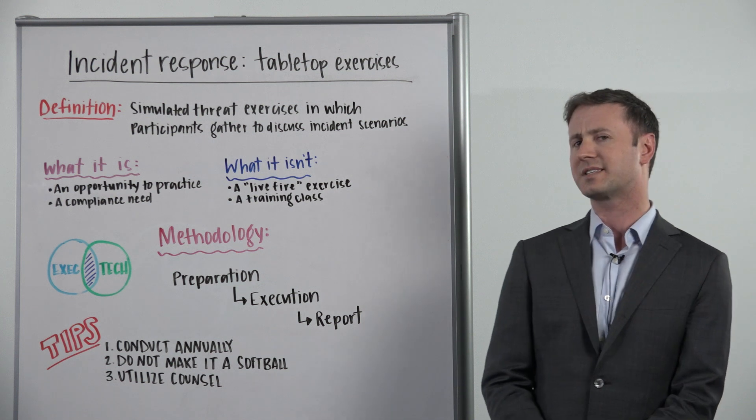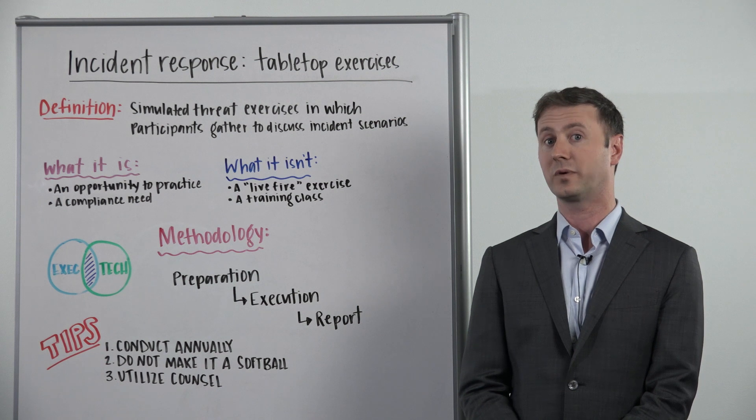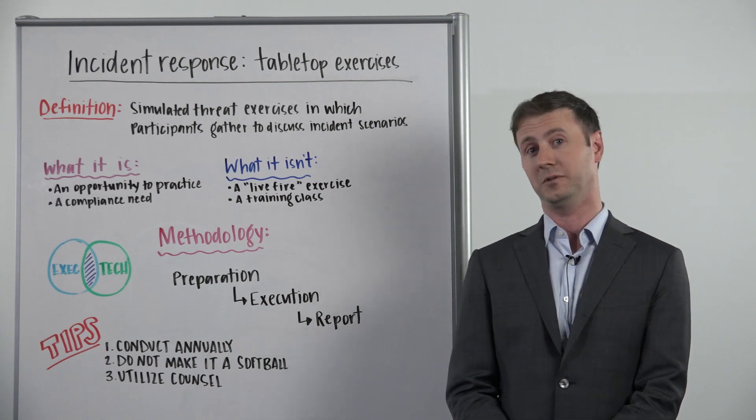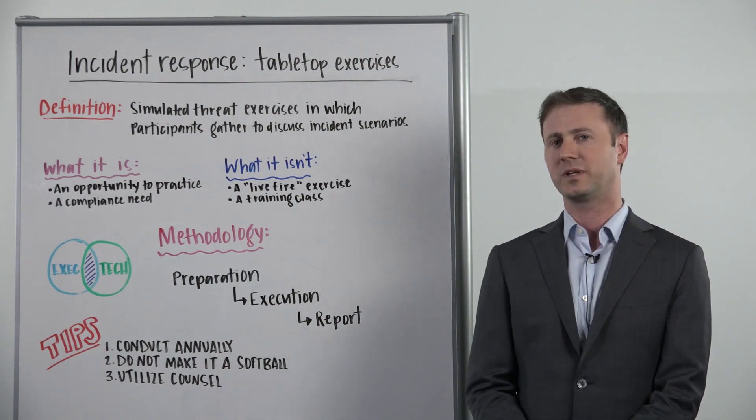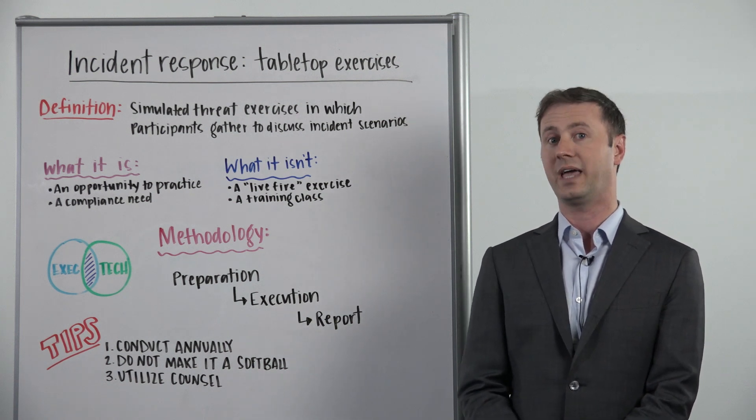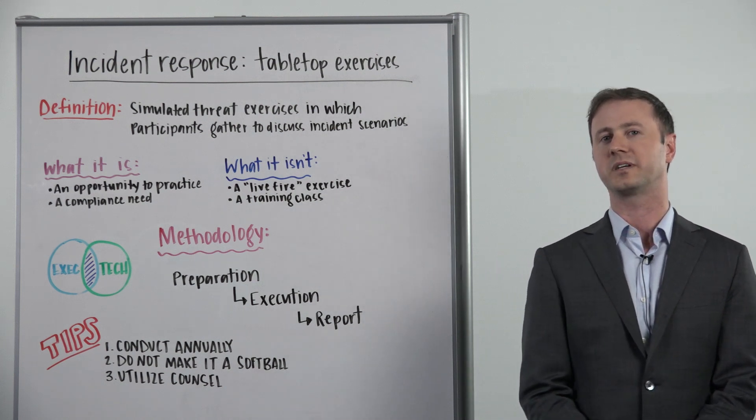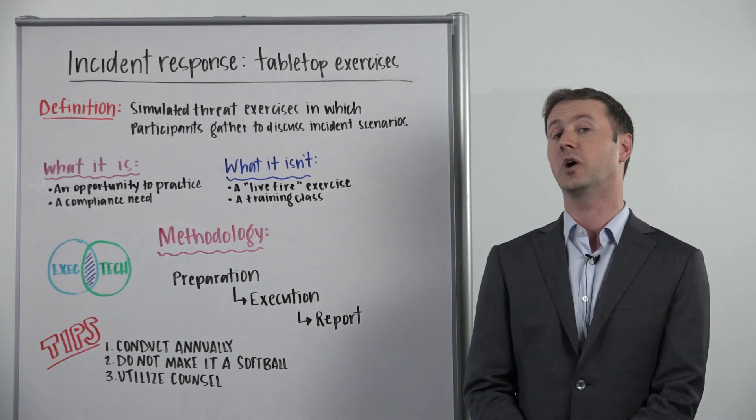One of the first things to decide when you get into a tabletop exercise is exactly what type you want to run. You can go with an executive tabletop or a technical. What that dictates is really what the audience will be for the exercise. It doesn't have to be one or the other. Oftentimes you can have an audience consisting of both, but it is advisable to look at the beginning to figure out what the majority of the audience will be.